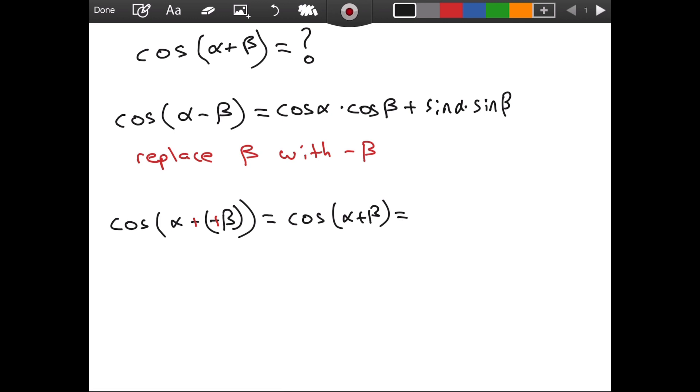So, what is it equal to then? Using this right part and substituting negative beta for beta, we will have, let's write it on a new line. We will have cosine of alpha times cosine of, this is the important part, not beta, but negative beta, a plus sign. We have sine of alpha times sine of, instead of beta, we will have negative beta.